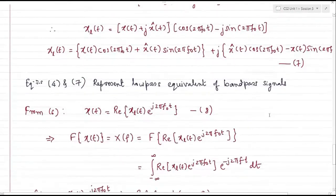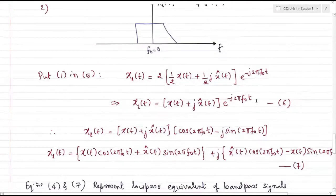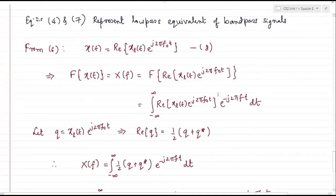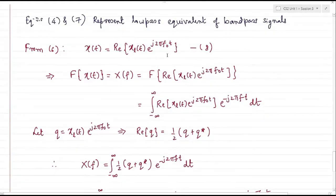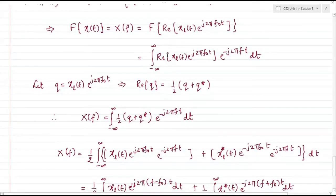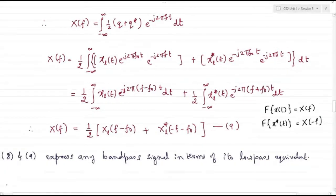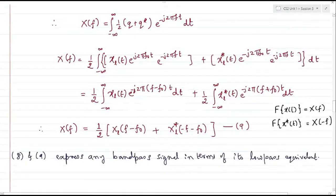Equations 4 and 7 represented the low pass equivalent of a band pass signal. Equation number 7 represents it in the time domain, and equation number 4 represents it in the frequency domain — it is just a downshifted version of the band pass signal. Given a low pass signal, we can also convert it into a band pass signal by translating it into a higher frequency spectrum. Equation number 8 gives one realization in the time domain, and we are now equipped with representation of low pass and band pass signals in both time and frequency domain.